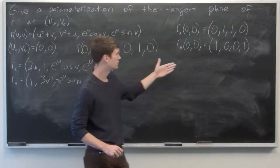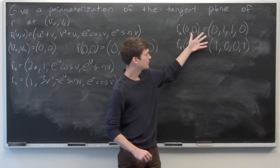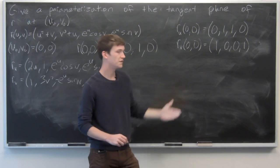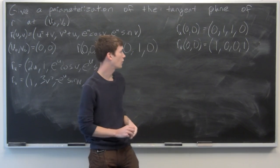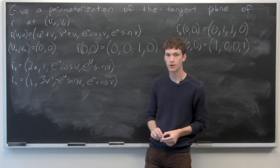Now we want to take the tangent space, which is a linear combination of these two vectors, and shift it to the point r(0,0) = (0, 0, 1, 0).